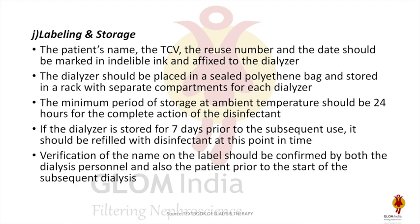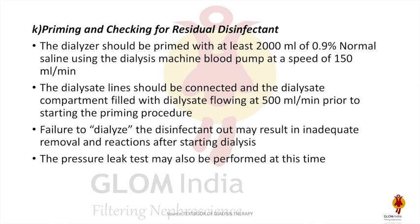Most importantly, verification of the name on the label should be confirmed by both the dialysis staff and the patient prior to the start of subsequent dialysis to prevent errors. For priming, generally 2000 ml of 0.9% normal saline is used with the dialysis machine blood pump at 150 ml per minute. The dialysate compartment should be filled with dialysate flowing at 500 ml per minute prior to starting priming, to clear the dialysate compartment. Failure to clear the disinfectant may lead to inadequate removal and severe reactions.